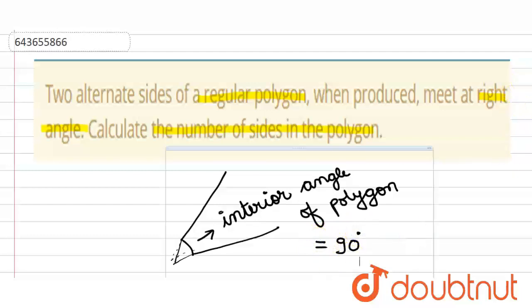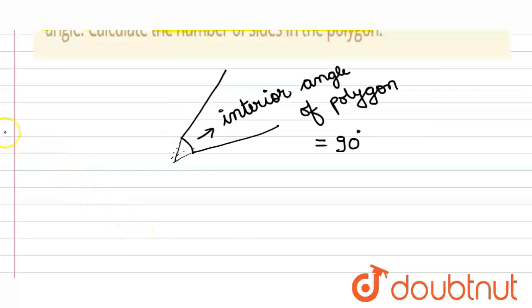So there is a formula, and formula is for the measure of each interior angle of polygon.